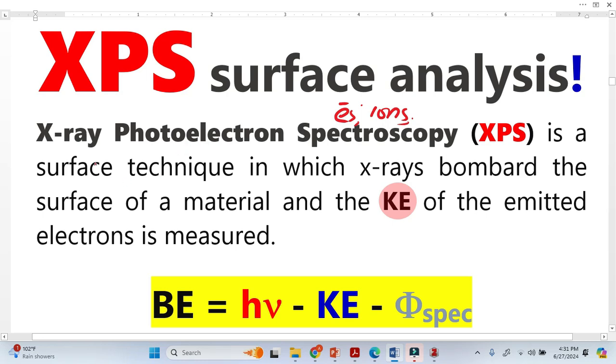Here in XPS, we simply bombard the sample with X-rays. Because of that X-ray energy, photoelectrons eject from the core of the atom. And this is the famous equation.